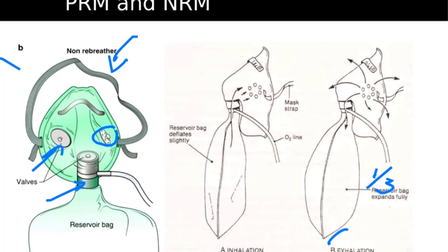So, as the patient exhales, there's going to be entry of the first third of his expiration into this reservoir bag. The remaining exhaled air goes out of these ports from the mask.